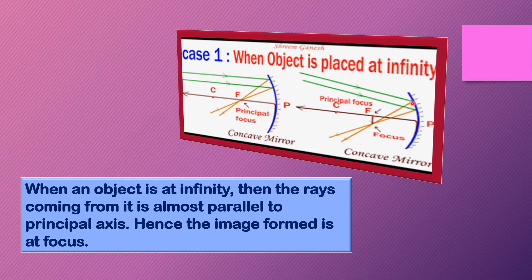In this diagram, this is a concave mirror. This is the principal axis, and from infinity parallel rays are coming. After reflecting, they are moving like this, and this is the intersection point of these two rays, so a point image will be formed over here.